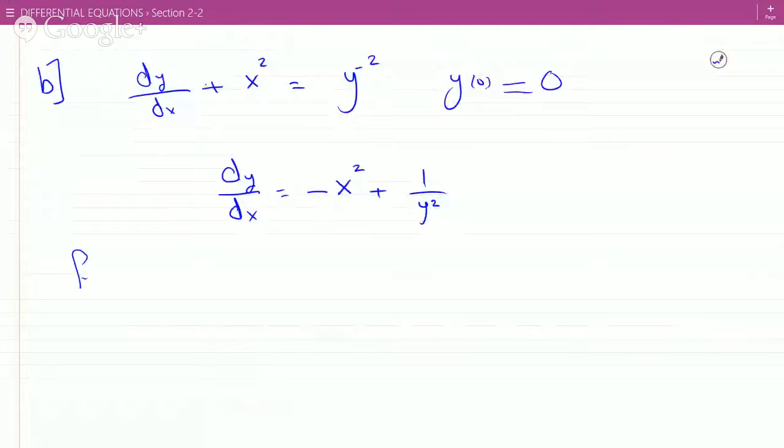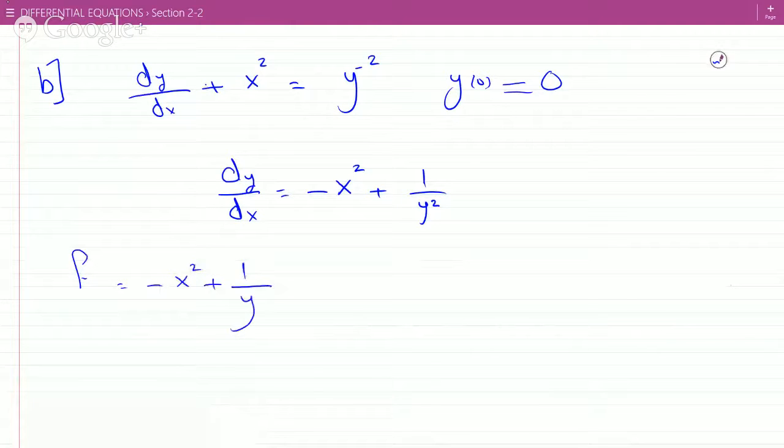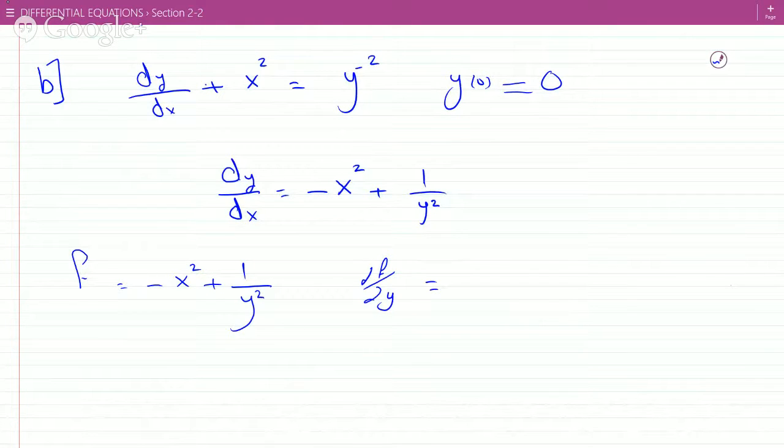f is minus x squared plus 1 over y squared, and df over dy is minus 2 over y cubed.